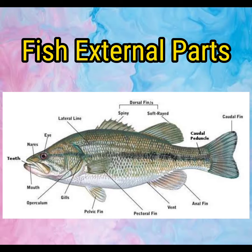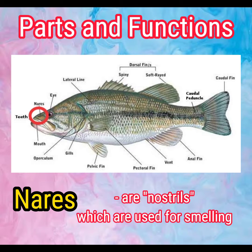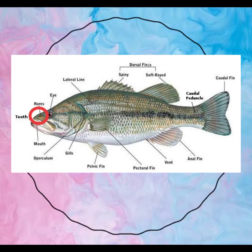These are the external parts of fish. The first one is neris. Neris are nostrils which are used for smelling.